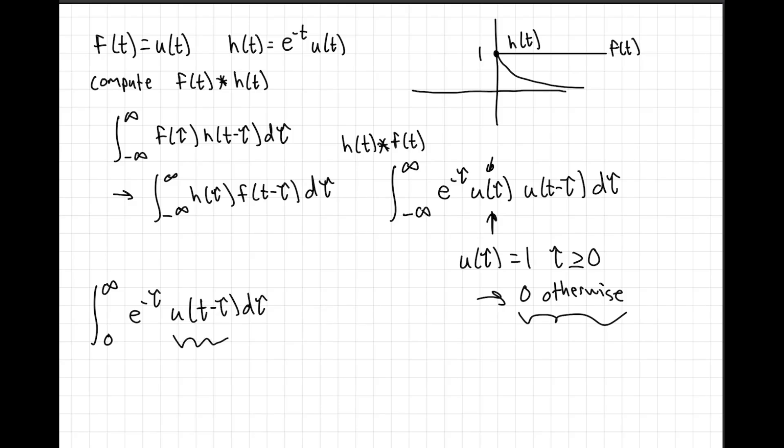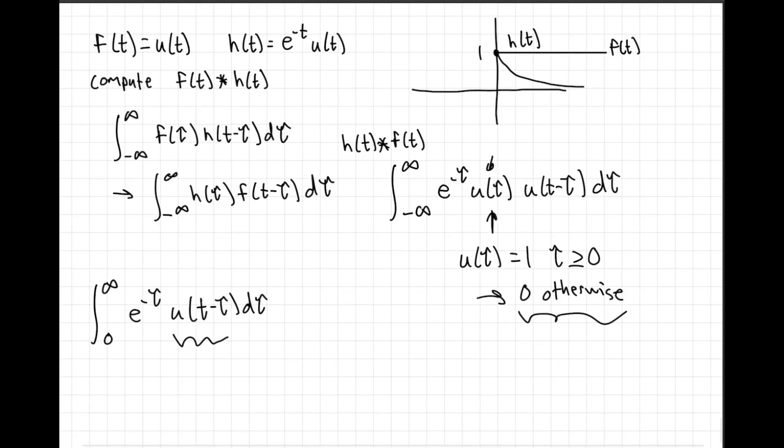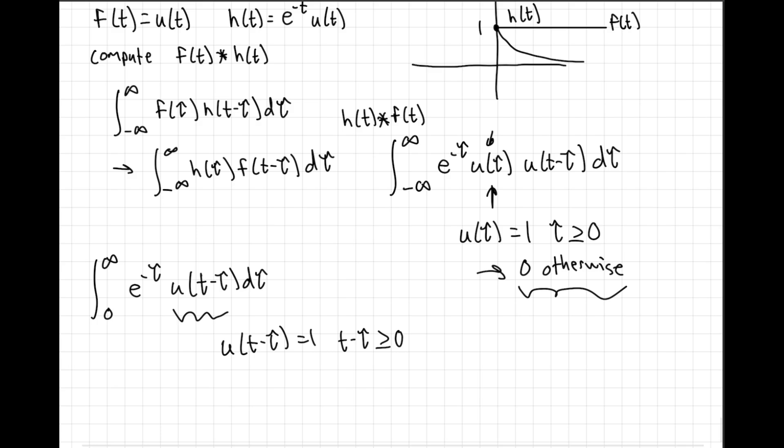What can we do here? We can follow a similar process to update our integration bounds. We have u of t minus tau equals 1 for t minus tau is greater than or equal to 0. We can move this to the other side. We get tau is less than or equal to t, and so it's 1 for that value and 0 otherwise.